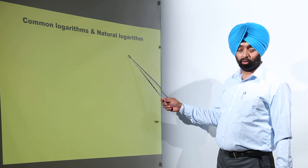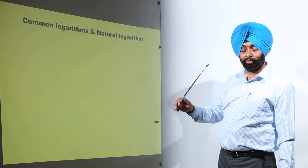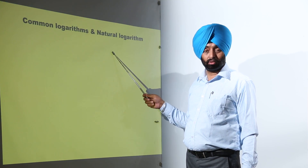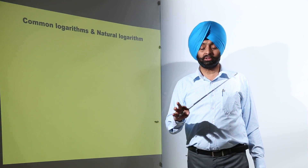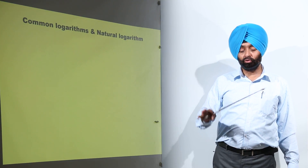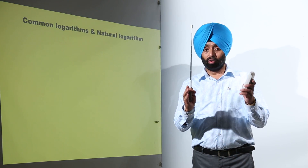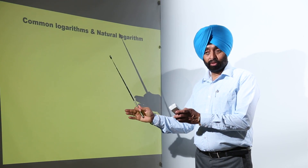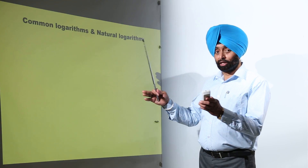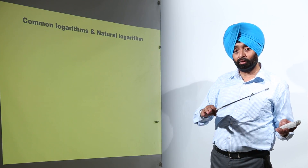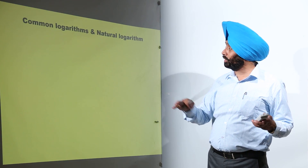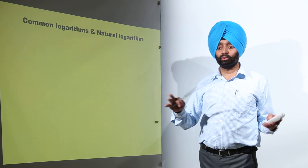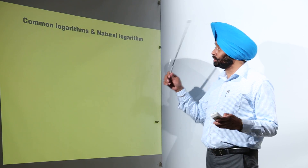We are having two types of logarithm: common logarithm and natural logarithm. If you use a scientific calculator, you will get both values. One value is in the books and a second value is in the scientific calculator, and in the scientific calculator we are having both the values. So don't be confused about what is the difference.